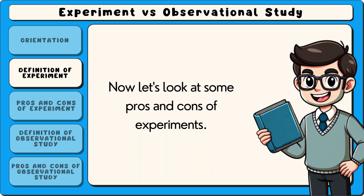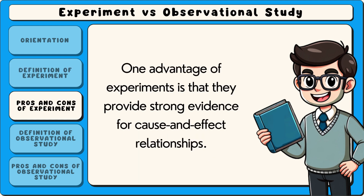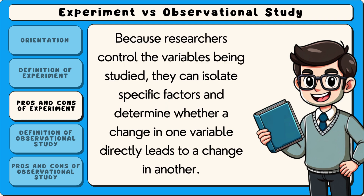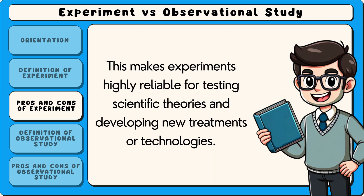Now let's look at some pros and cons of experiments. One advantage of experiments is that they provide strong evidence for cause and effect relationships. Because researchers control the variables being studied, they can isolate specific factors and determine whether a change in one variable directly leads to a change in another. This makes experiments highly reliable for testing scientific theories and developing new treatments or technologies.